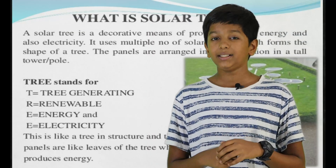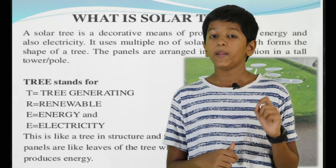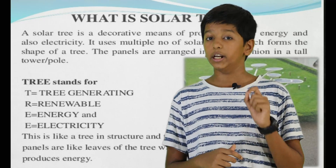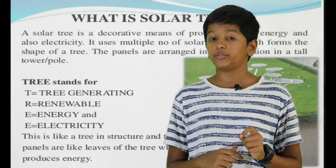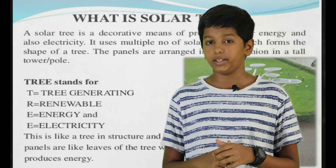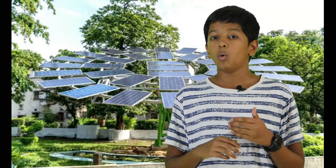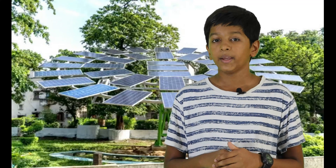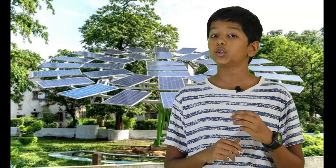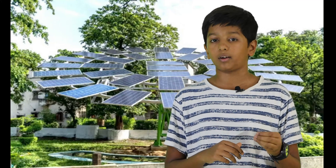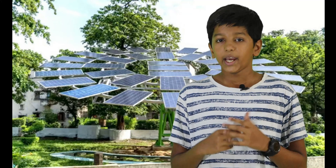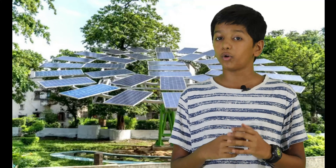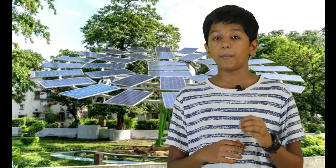Now let's see the full form of TREE: T stands for Tree Generating, R stands for Renewable, E stands for Energy, and the other E stands for Electricity. A solar tree is a structure incorporating solar energy technology on a single pillar, like a tree trunk. It may be a solar artwork or a functional power generator.